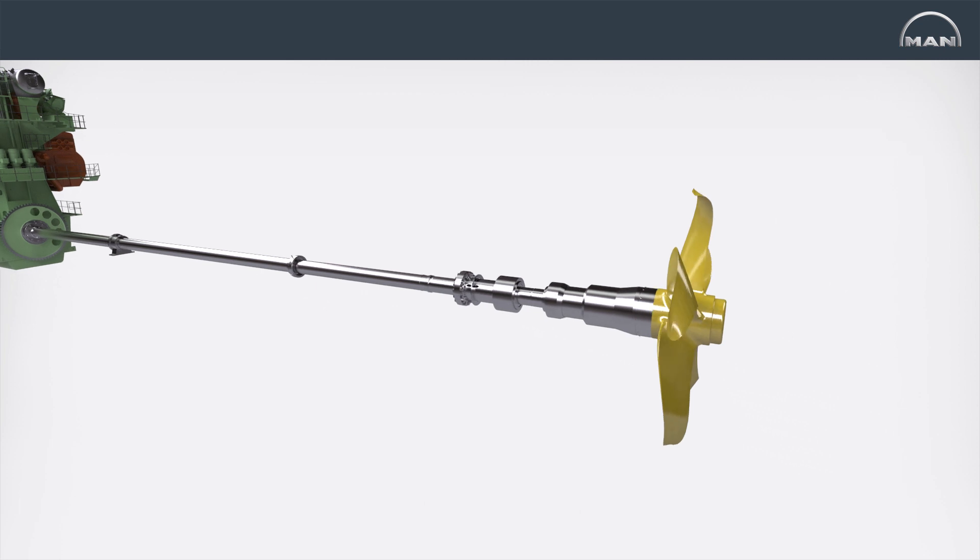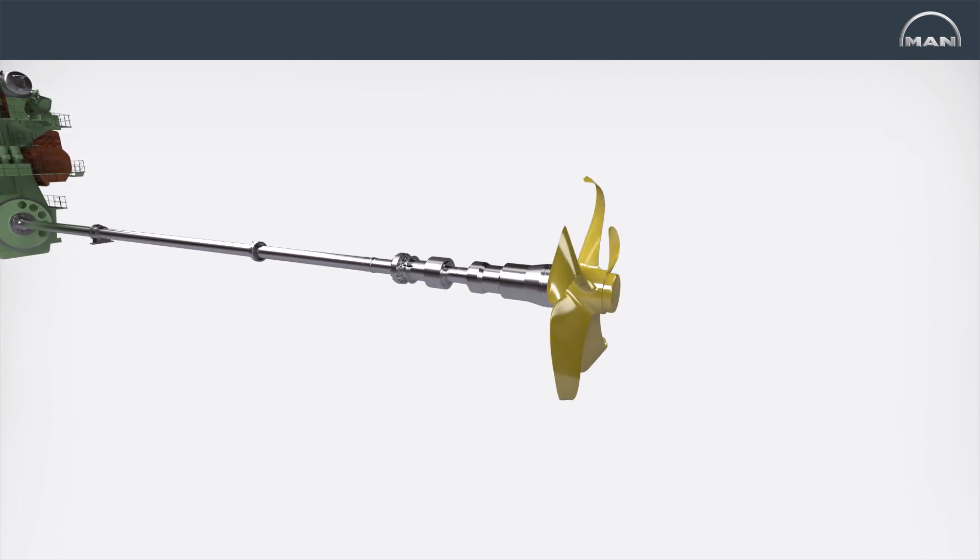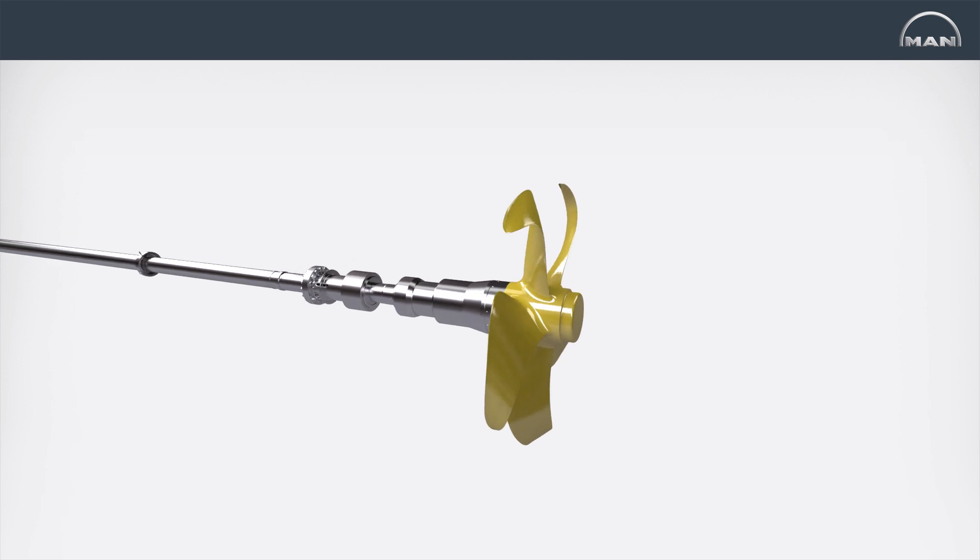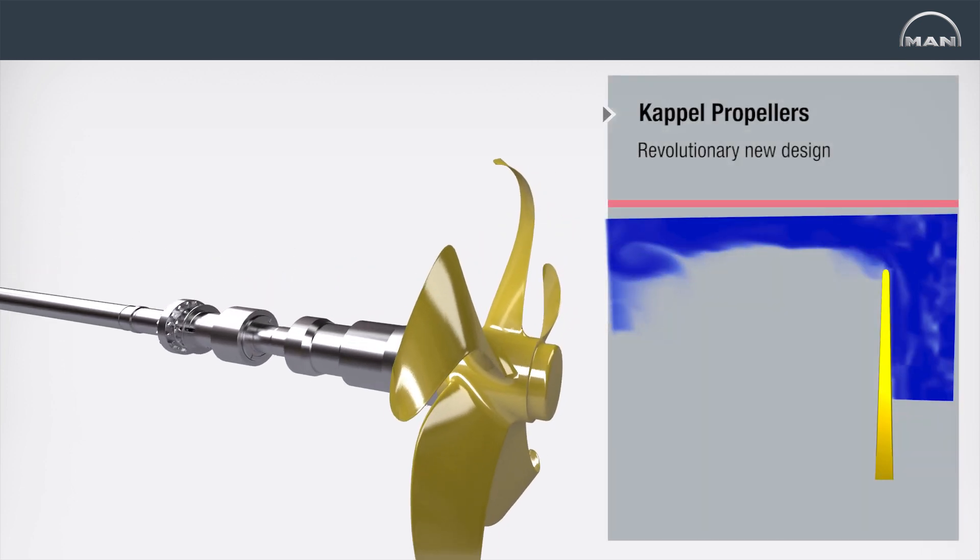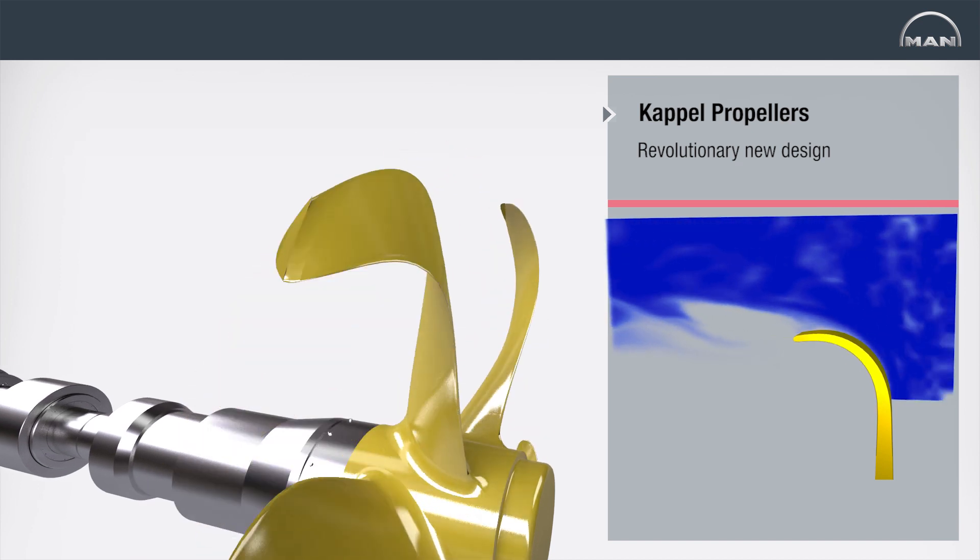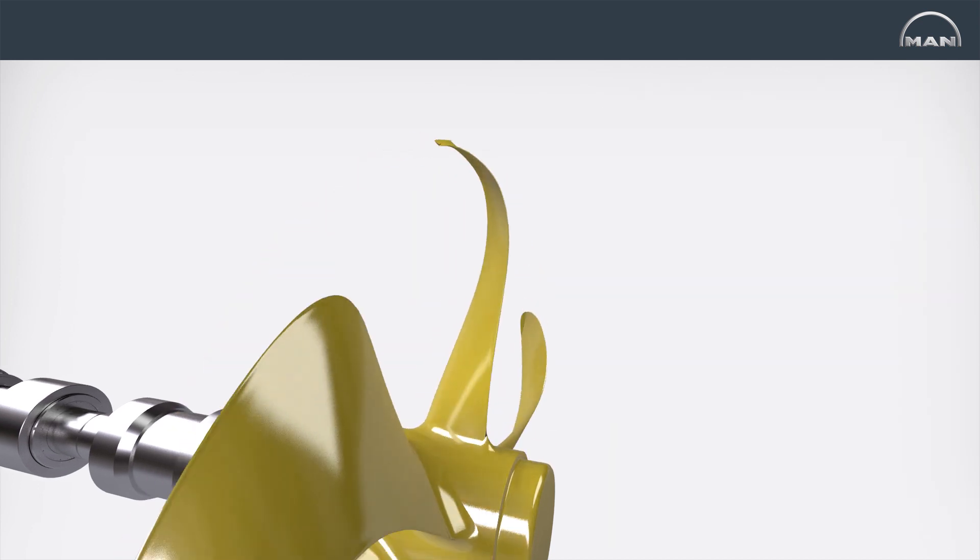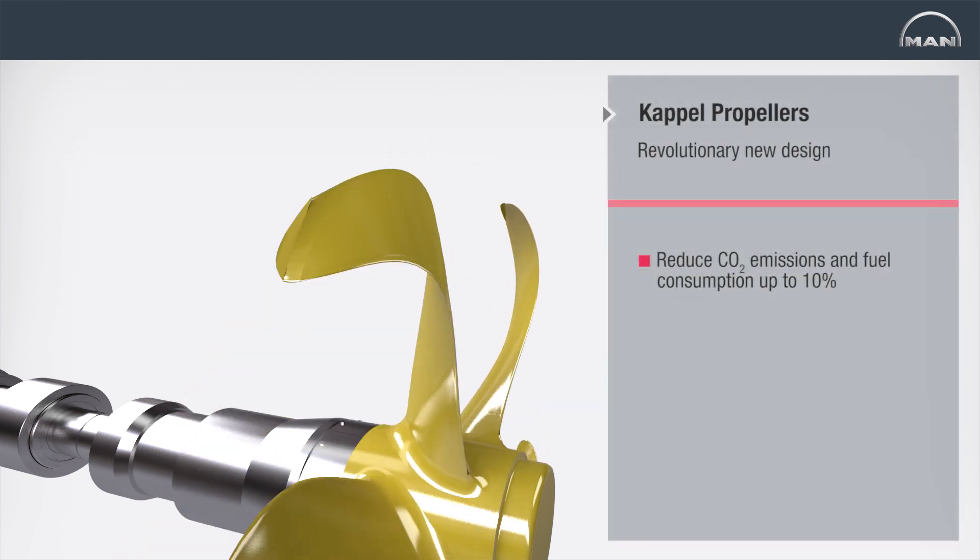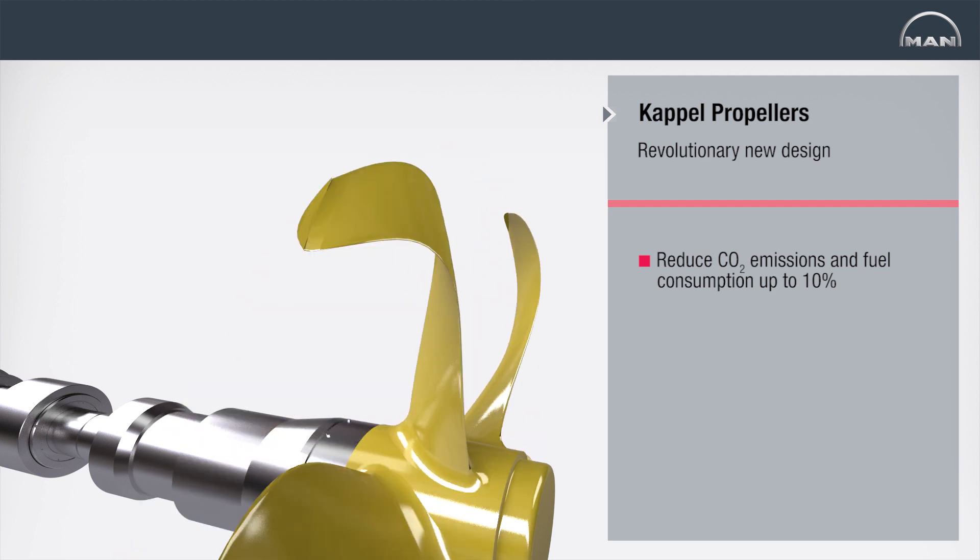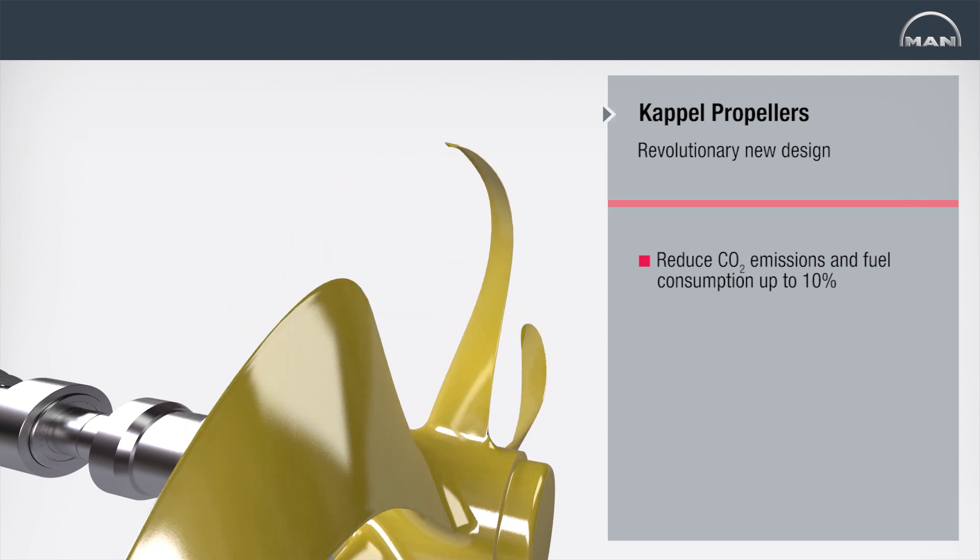The development of the Capell propeller portfolio is the result of a concentrated body of work lasting over two decades. The Capell propeller minimizes the flow of water over each propeller tip, increasing the total efficiency of the propellers compared to conventional units. In combination with the G-Type engine, Capell propellers can reduce CO2 emissions and fuel consumption by up to 10%.